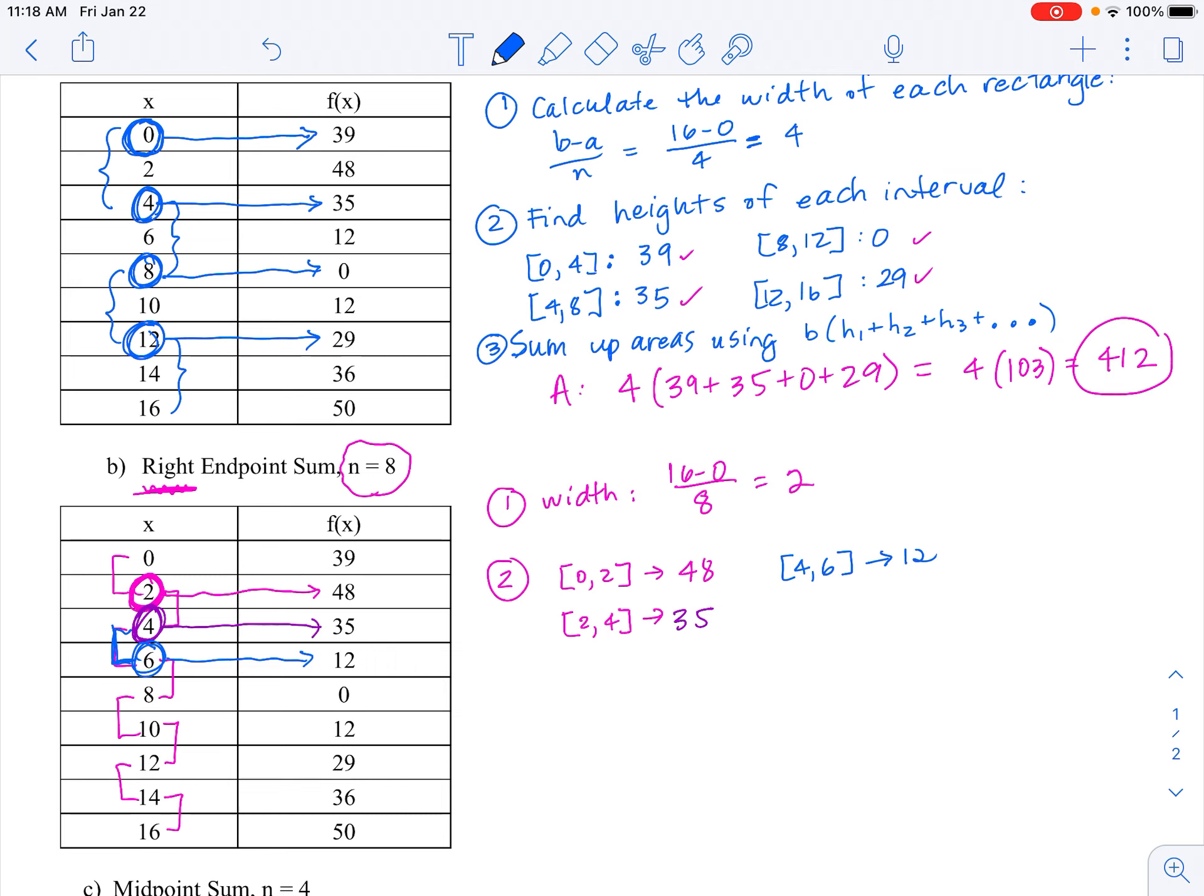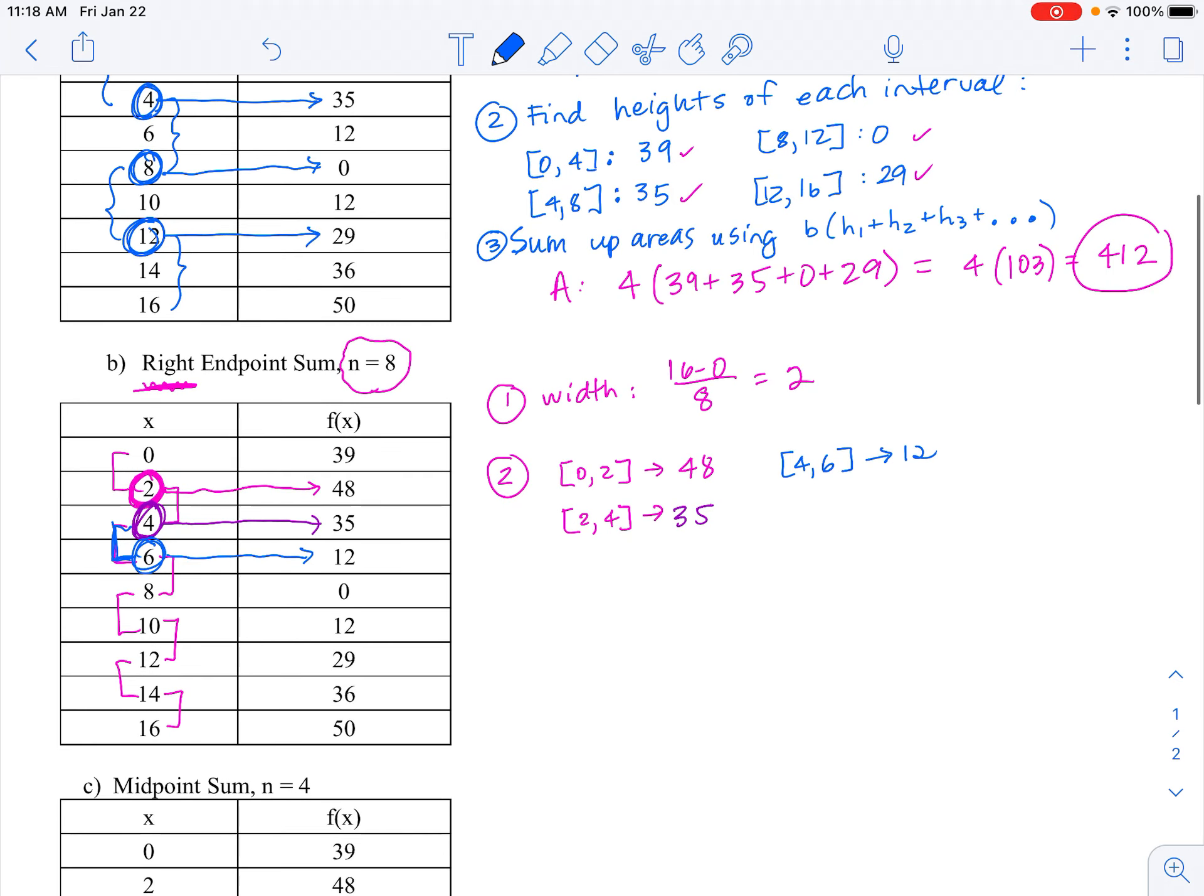When we have as many rectangles as we have data points here, we're going to actually make use of every single y value with the exception of 39, because that first y value is at a left endpoint, and since we're doing right endpoint sum, it's not going to be in our calculation.